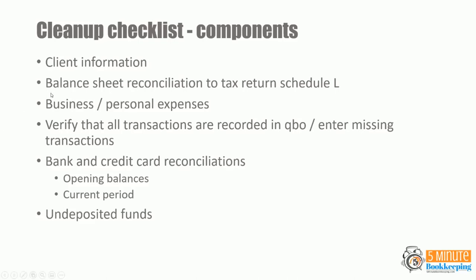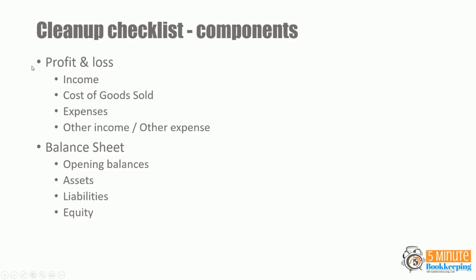We talked about some of those already: client information, the balance sheet reconciliation to the tax return Schedule L, addressing business and personal expenses and commingling, verifying that all transactions are recorded in QBO and entering any missing transactions, bank and credit card reconciliations, getting those opening balances cleaned up, cleaning up the current period reconciliations, cleaning up undeposited funds, and the profit and loss. All sections of the profit and loss need to be reviewed and cleaned up — income, cost of goods sold, expenses, other income, other expense. Also the balance sheet: clean up the opening balances, then clean up all accounts — assets, liabilities, and equity.